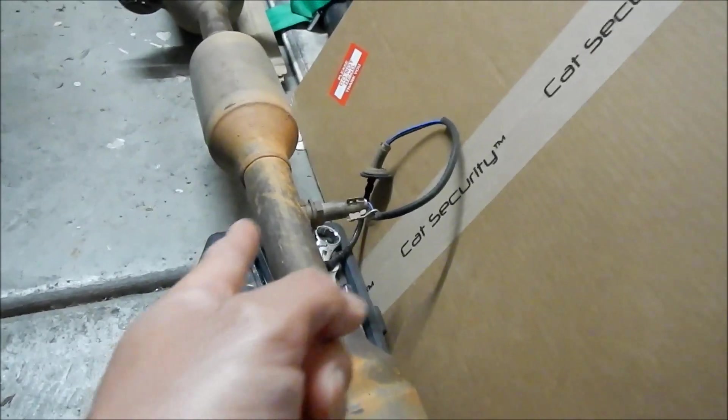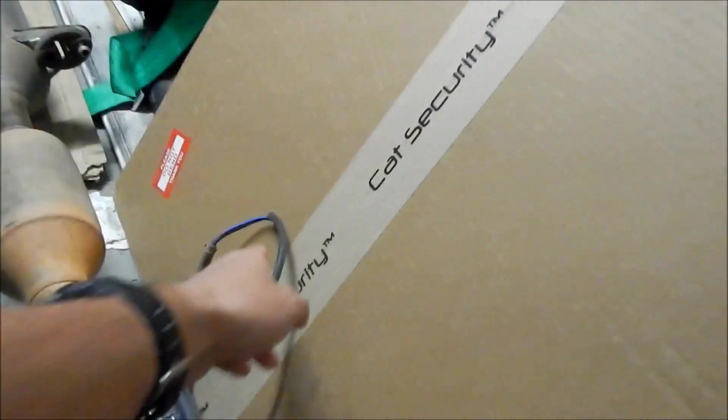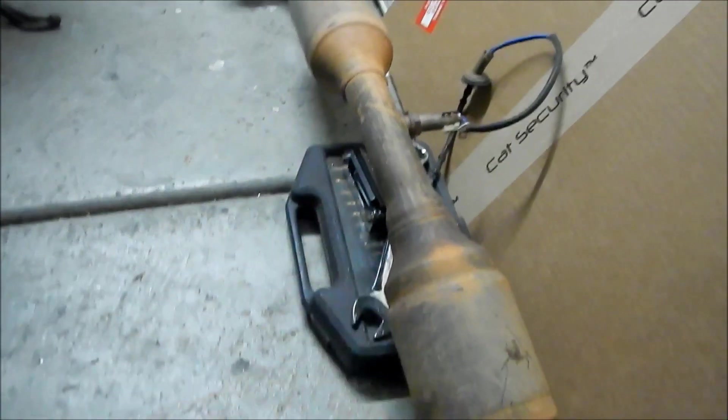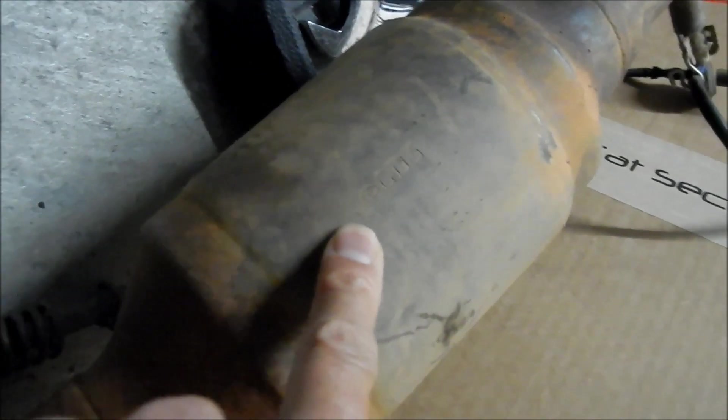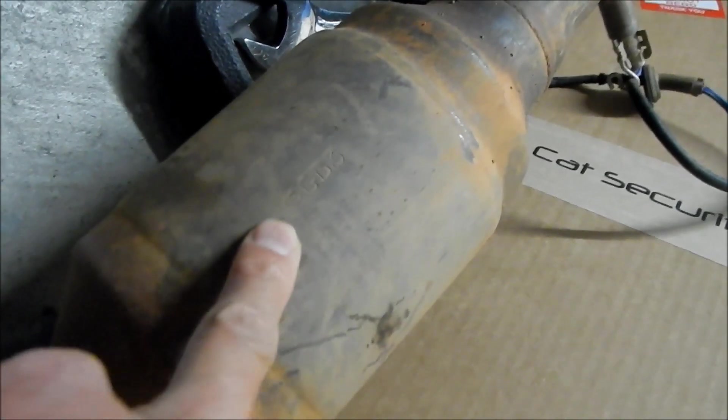Yeah, so this is the downstream O2 sensor. This is the one that they cut. This is the one that tells how efficient your cat is working. The funny thing is it's only after the first cat, right? There's two, there's one here and there's one here. So these are the codes that are on the cat that the smog technician will be looking for.